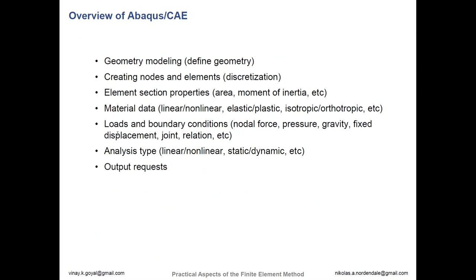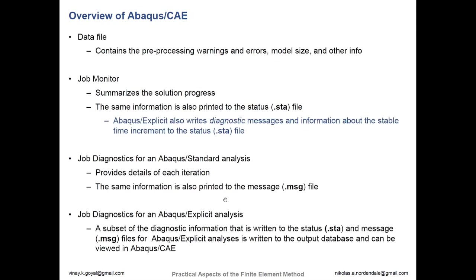The message file is very useful in explicit analysis because you can see the progress making through the time-stepping algorithm. For explicit models, convergence usually isn't as much of an issue because you're not doing Newton-Raphson iterations. However, it's really good information for projecting how long the model is going to run. It can tell you what your stable time increment is. If you make your mesh too fine or too dense, you could see from the output that this is going to take hours or even days to run, and decide whether to continue the job or kill it and make adjustments.